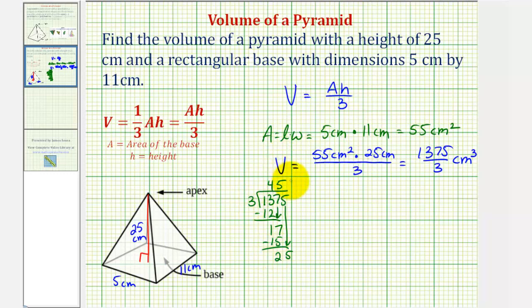Bring down the last digit of 5. There are 8 threes in 25. 8 times 3 is 24. Subtract. We have a remainder of 1. So we could also express this volume as 458, and then for the fraction we have the remainder over the divisor. So this would give us 458 and 1/3 cubic centimeters.